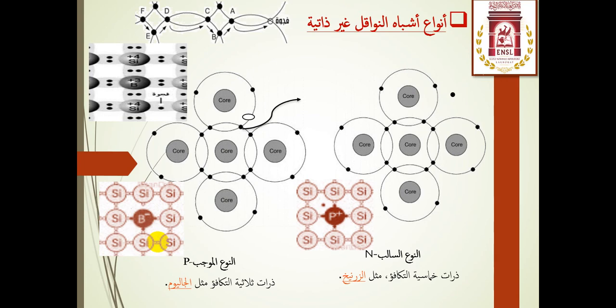مثال آخر: في المسجد عند تسوية الصفوف، يأتي أحد المصلين من الصف الثاني إلى الصف الأول، ويأتي آخر من الصف الثالث ليملأ الفراغ في الصف الثاني؛ فنلاحظ وكأن المكان الفارغ هو الذي ينتقل. هنا عند التشويب بشائبة ثلاثية التكافؤ يصبح لدينا أيون سالب اكتسب إلكترون من شبه الموصل. هذه الذرة القابلة أو المستقبلة لا تشارك في عملية التوصيل، بل الثغرة هي المسؤولة عن التوصيل الكهربائي.